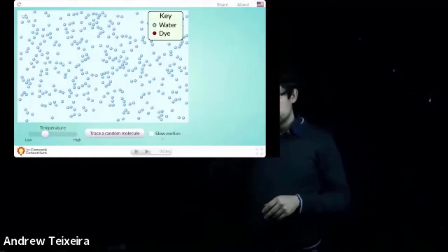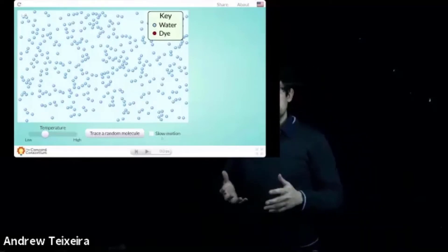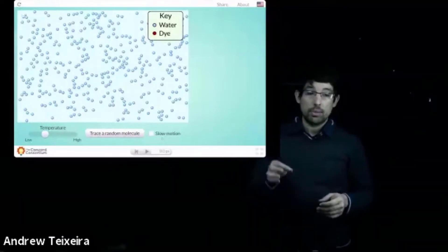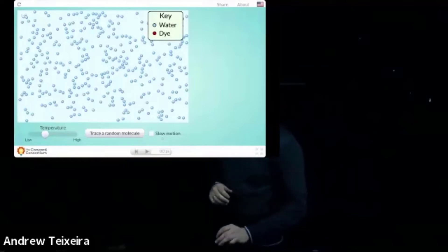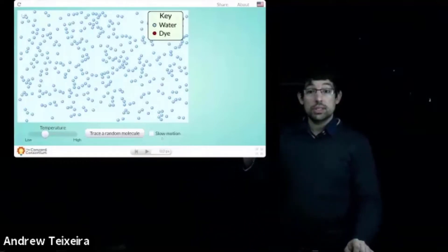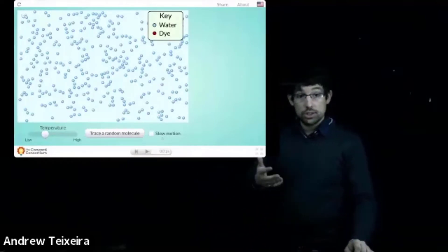So the blue molecules represent water, a solvent, and the red molecules represent a drop of dye that we put inside that water. So let's go ahead and see what will happen if we decide to allow this simulation to run in time.